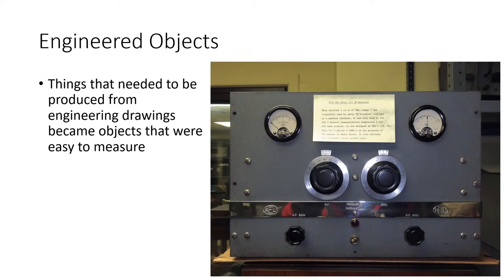As time wore on, engineered objects needed precision. If you look at electronics from the 1930s, they tended to have very geometric designs that were easy to describe. This object here is actually the first commercial FM radio — the case was designed by my dad in 1938. The design used very simple rectangular shapes and circles — very easy to measure and describe using simple tools.